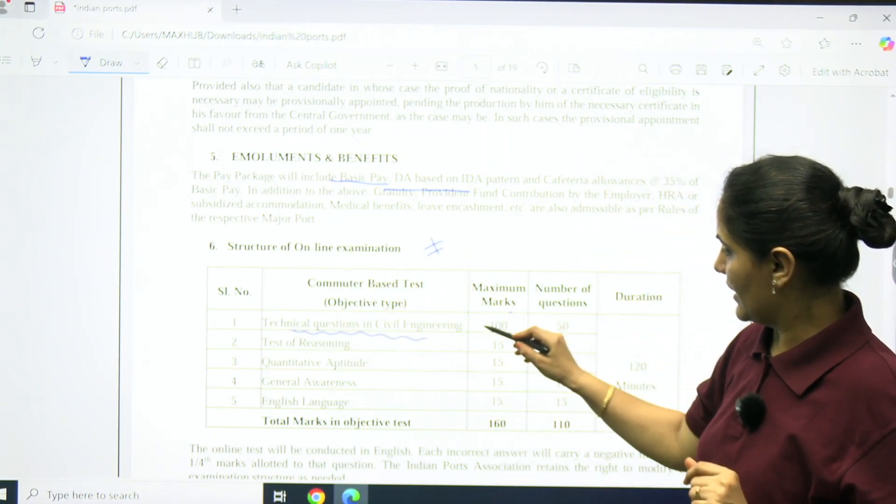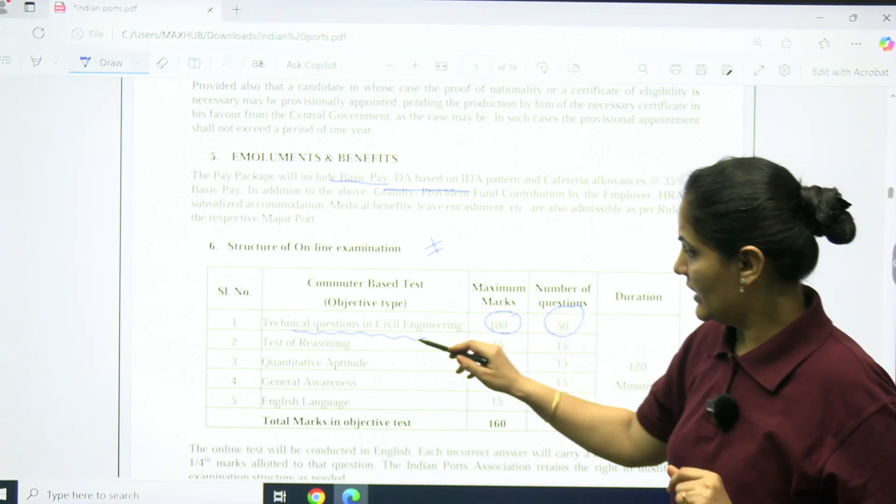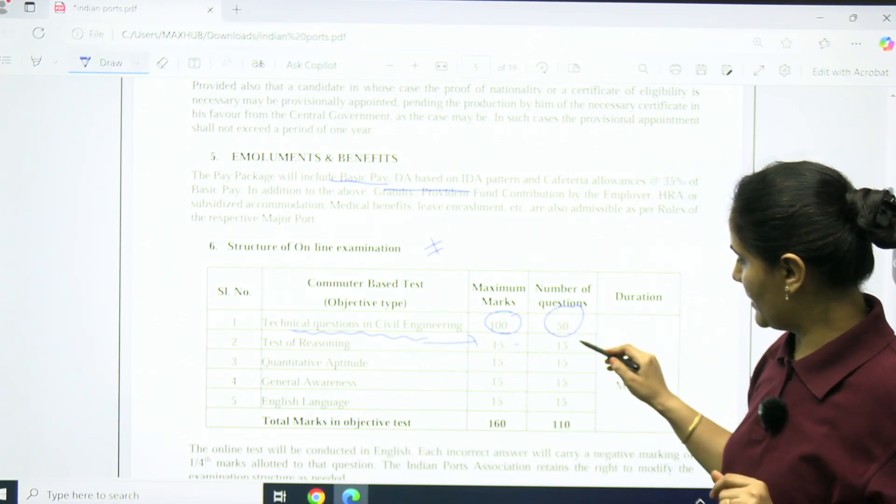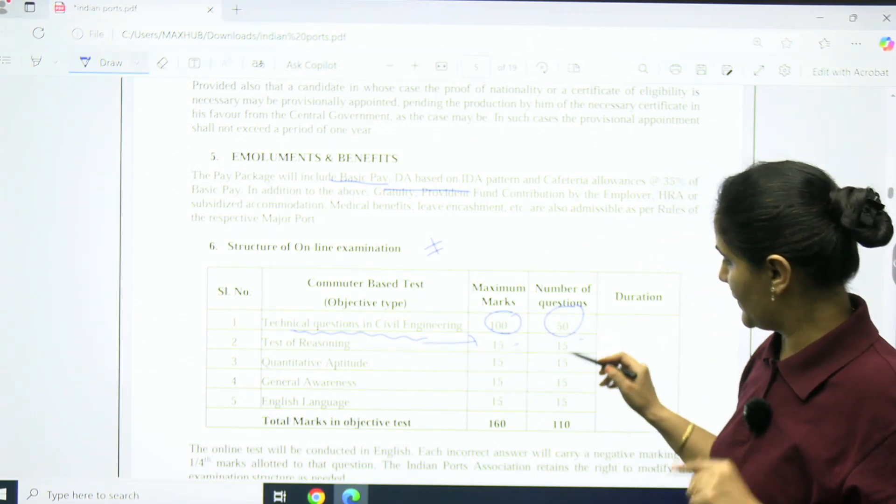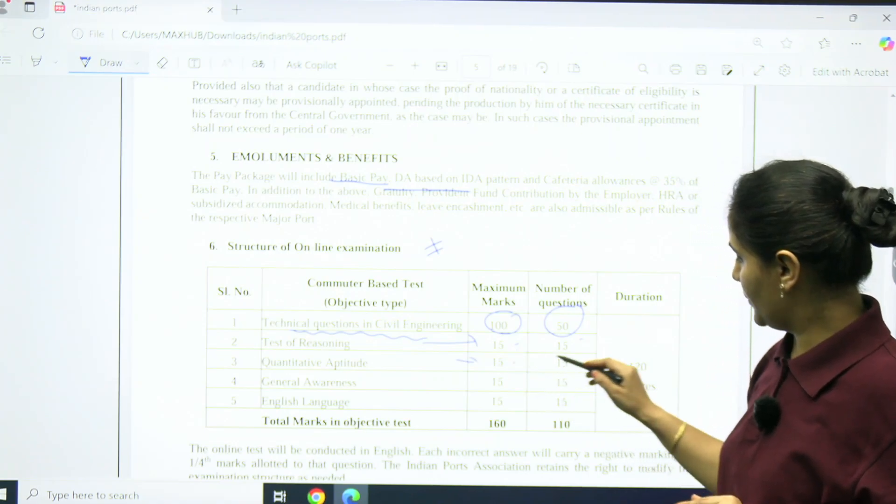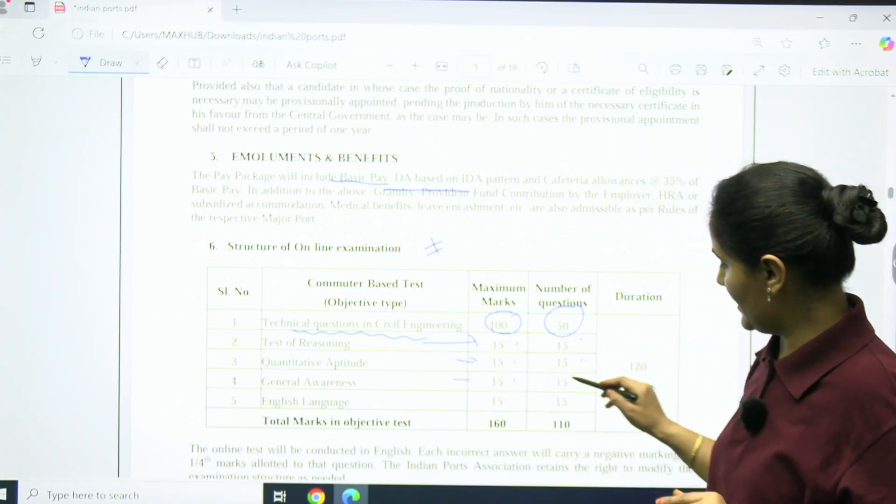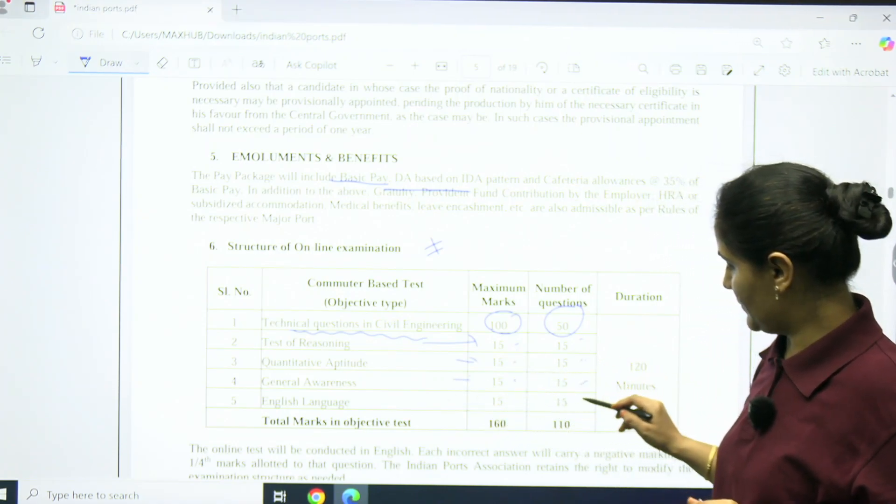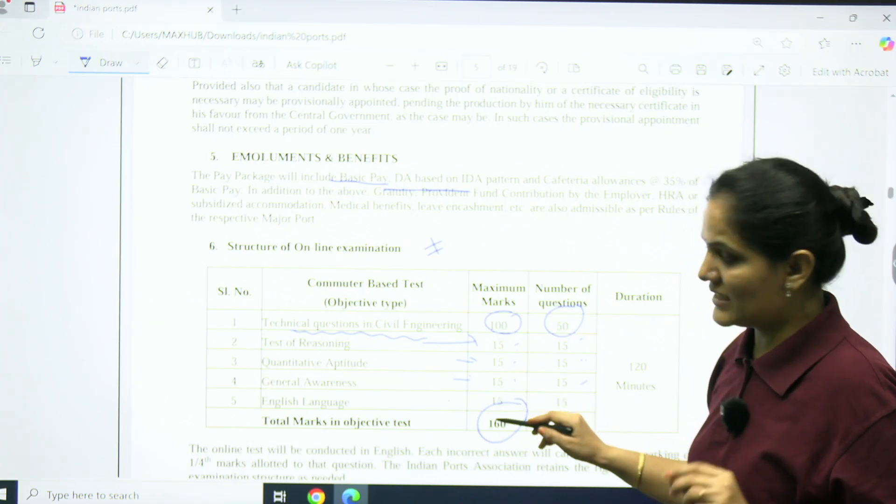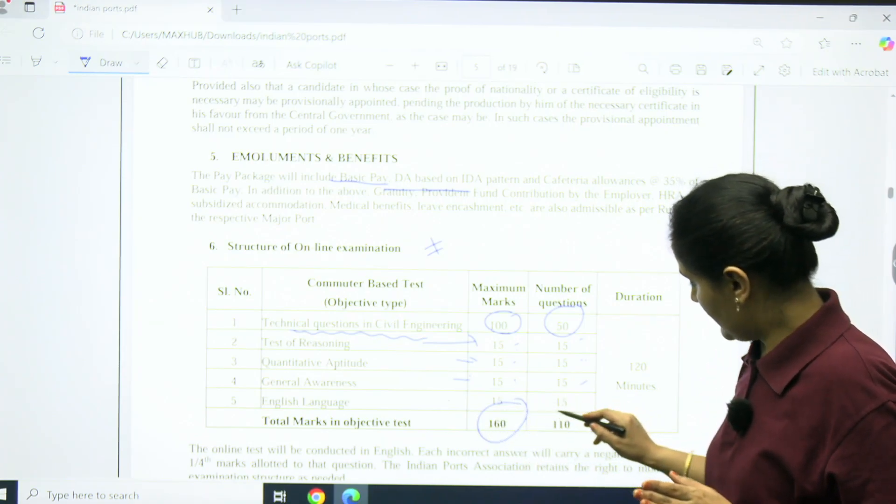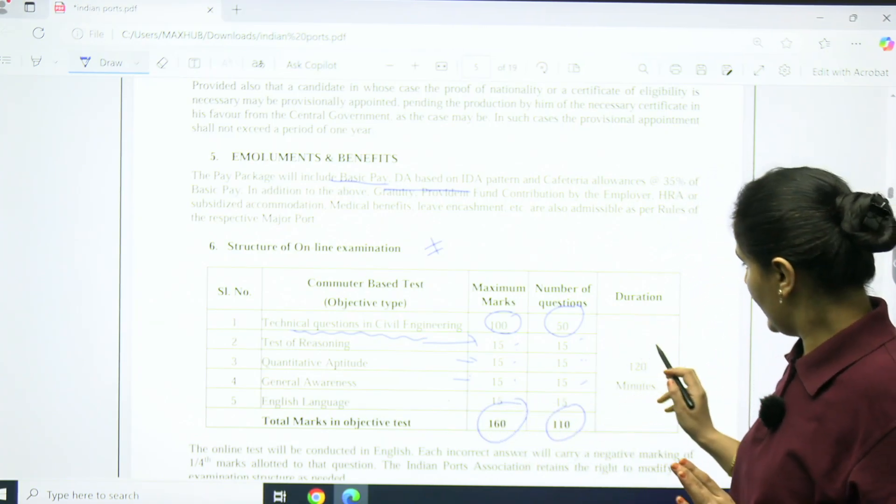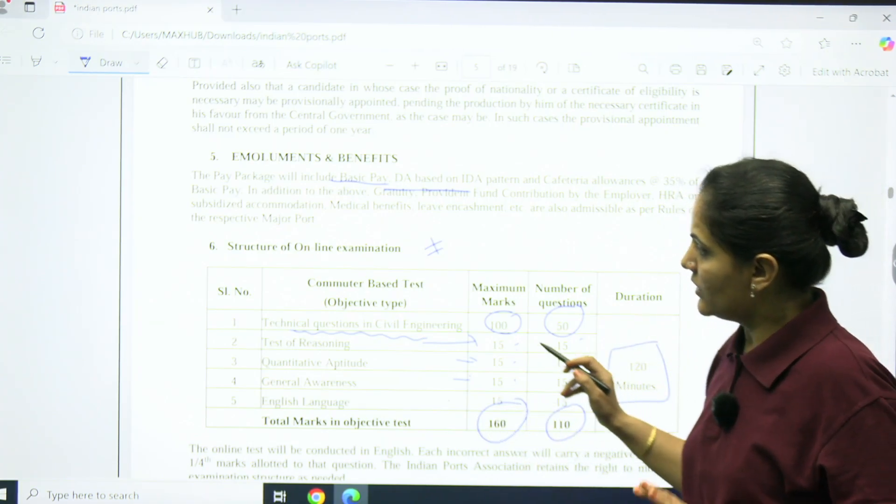This is technical questions in civil engineering, 100 marks, 50 questions. Test of reasoning, 50 marks, 15 questions. Quantitative aptitude, 15 marks, 15 questions. General awareness, 15 marks, 15 questions. English language, 15 marks, 15 questions. Maximum marks will be 160, number of questions will be 110, and duration will be 120 minutes.